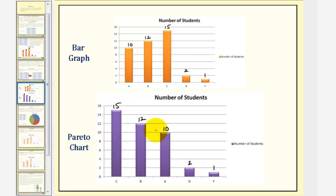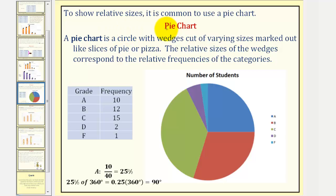And now let's display the same data as a pie chart. To show relative sizes, it is common to use a pie chart. A pie chart is a circle with wedges cut out of varying sizes marked out like slices of pie or pizza. The relative sizes of the wedges correspond to the relative frequencies of the categories.